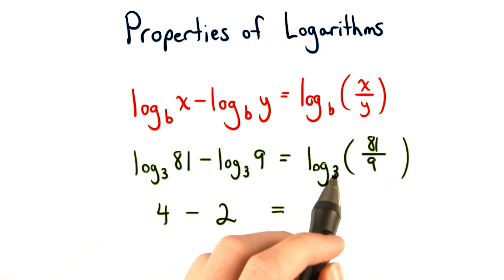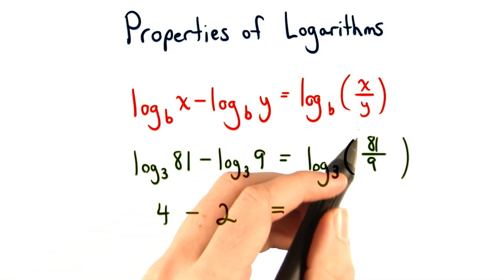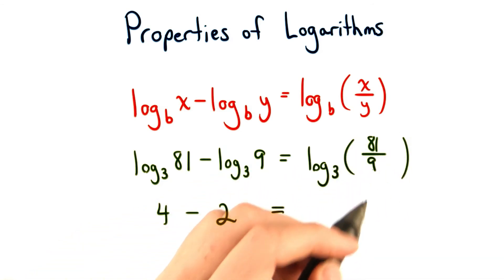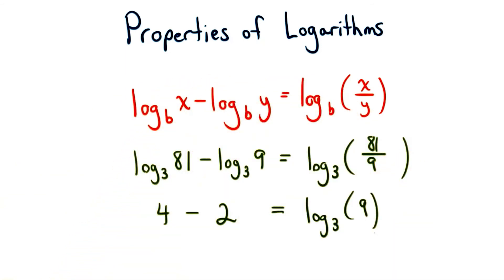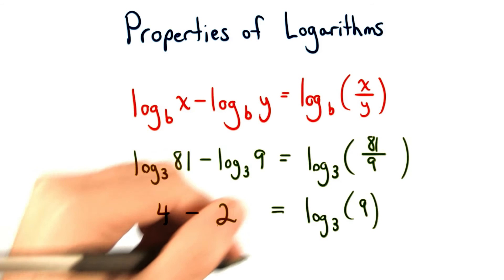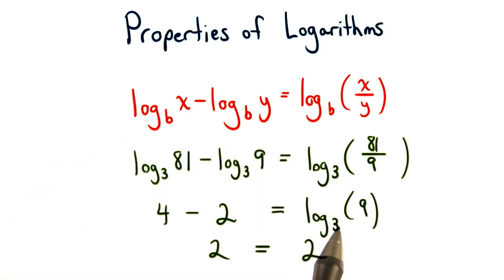on the right hand side, we'll have the log of base 3 of 81 divided by 9. We know 81 divided by 9 really equals 9, so we have log of base 3 of 9. Now we can just subtract here, so we get 2 equal to 2. We know log of base 3 of 9 is really just 2, as before.